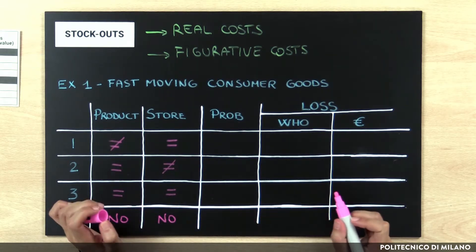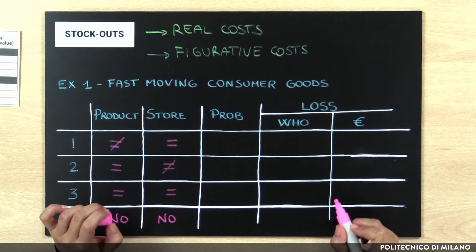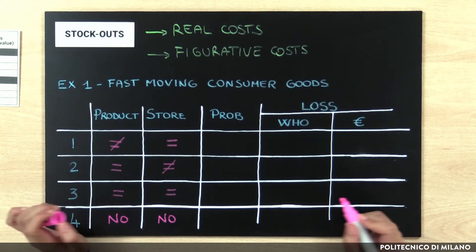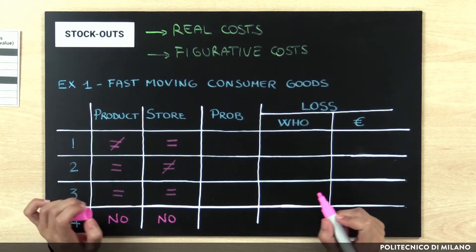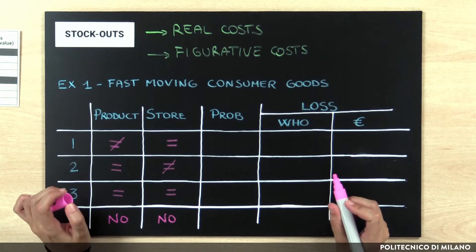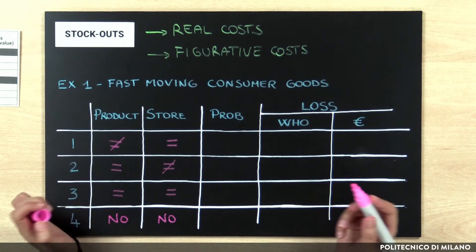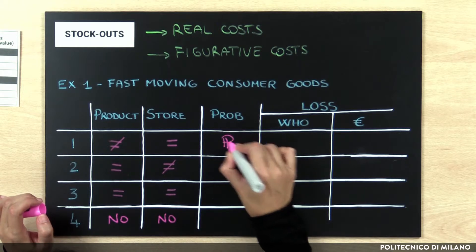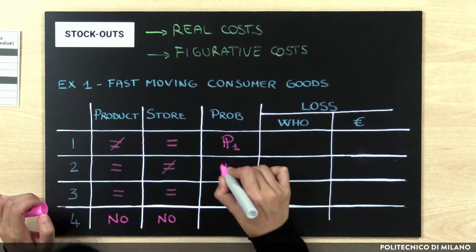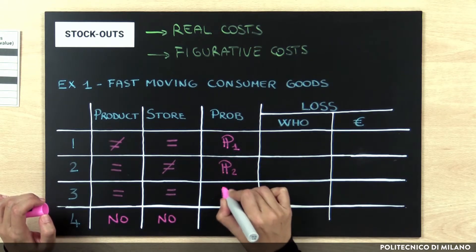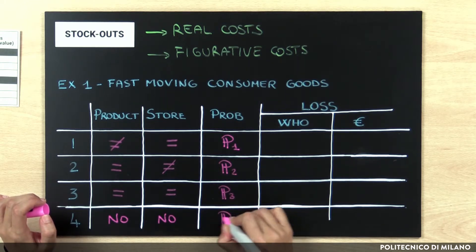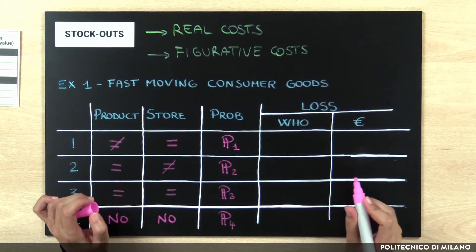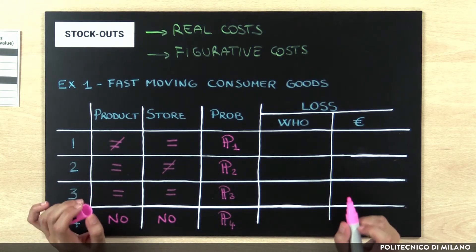This being the situation, how can we assess the costs related to the stock-out? We have to understand, first of all, the probabilities of the different consumer behaviors. They are quite difficult to assess and can be estimated by interacting with the customer, for example with surveys. So we can define the probability of situation number 1, number 2, number 3, and number 4.